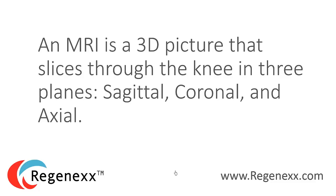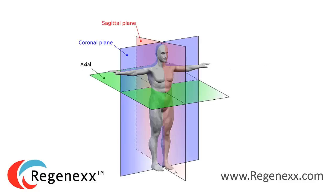An MRI is a 3D picture that slices through the knee in three planes: sagittal, coronal, and axial. The sagittal plane is a side view — essentially a saw-you-in-half view from the side. The axial plane is a traditional top-down saw-you-in-half view, and the coronal plane is from the front.